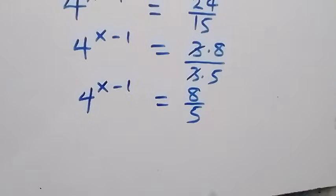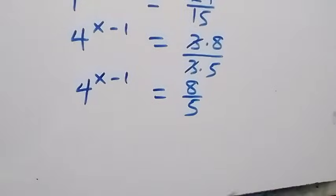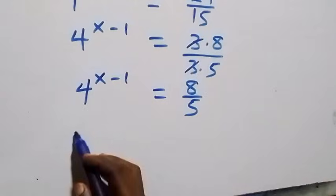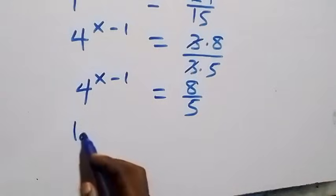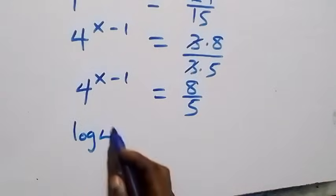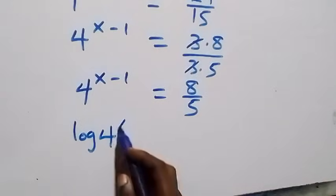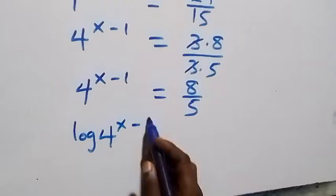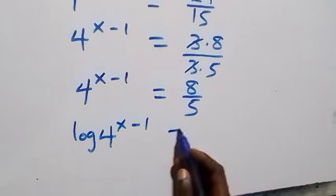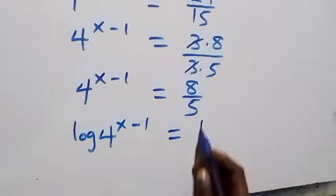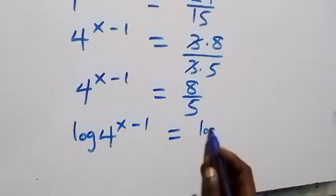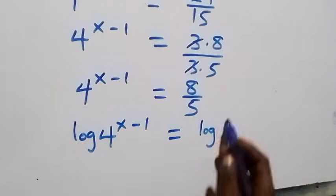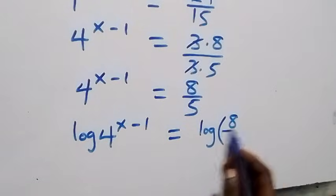And we have 4 raised to power x minus 1. Next step, we take the log on both sides, and we have log of 4 raised to power x minus 1, equals to log of 8 over 5.